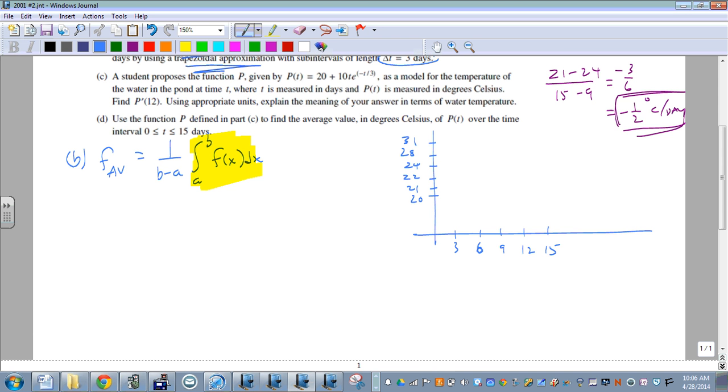So if we plot these points on the graph, at 0, the temperature is 20 degrees. At 3, it's 31. At 6, it's 28. 9 is 24. 12 is 22. And 15 is 21.